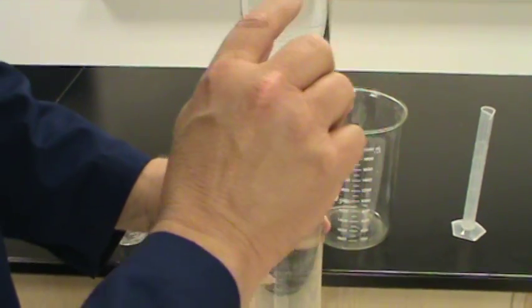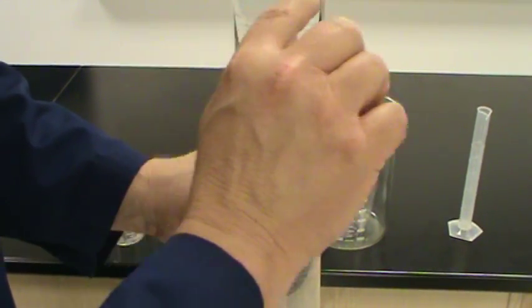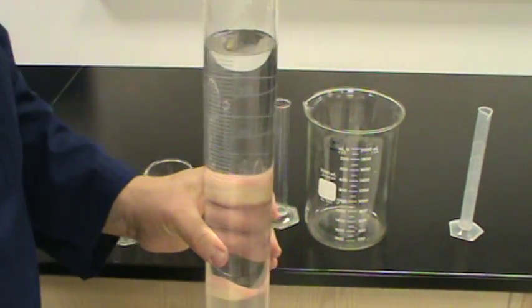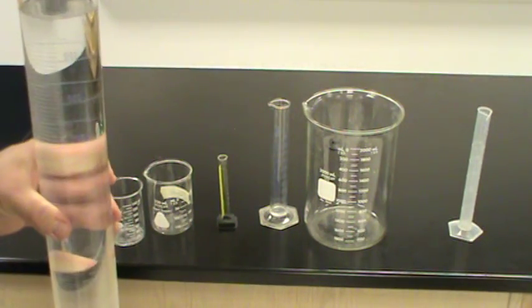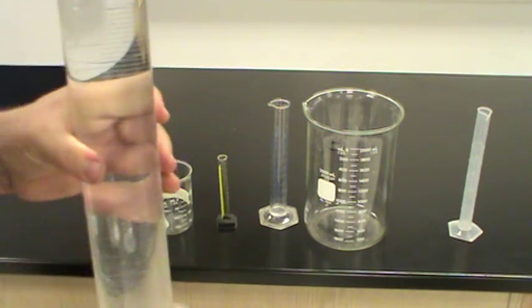And remember in a previous video, because it's a concave surface, we read to the bottom of the concave shape of the liquid. Because remember, the liquid molecularly wants to crawl right up out the side here. So let's just see if our measuring instruments are actually accurate.